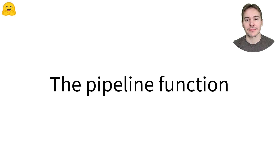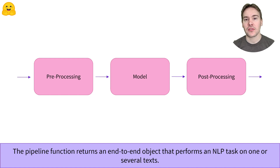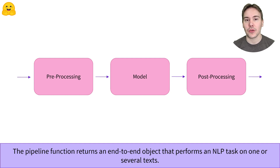The pipeline function is the most high-level API of the Transformers library. It regroups together all the steps to go from raw text to usable predictions. The model is at the core of a pipeline, but the pipeline also includes all the necessary pre-processing, since the model expects numbers rather than text, as well as some post-processing to make the output human readable.